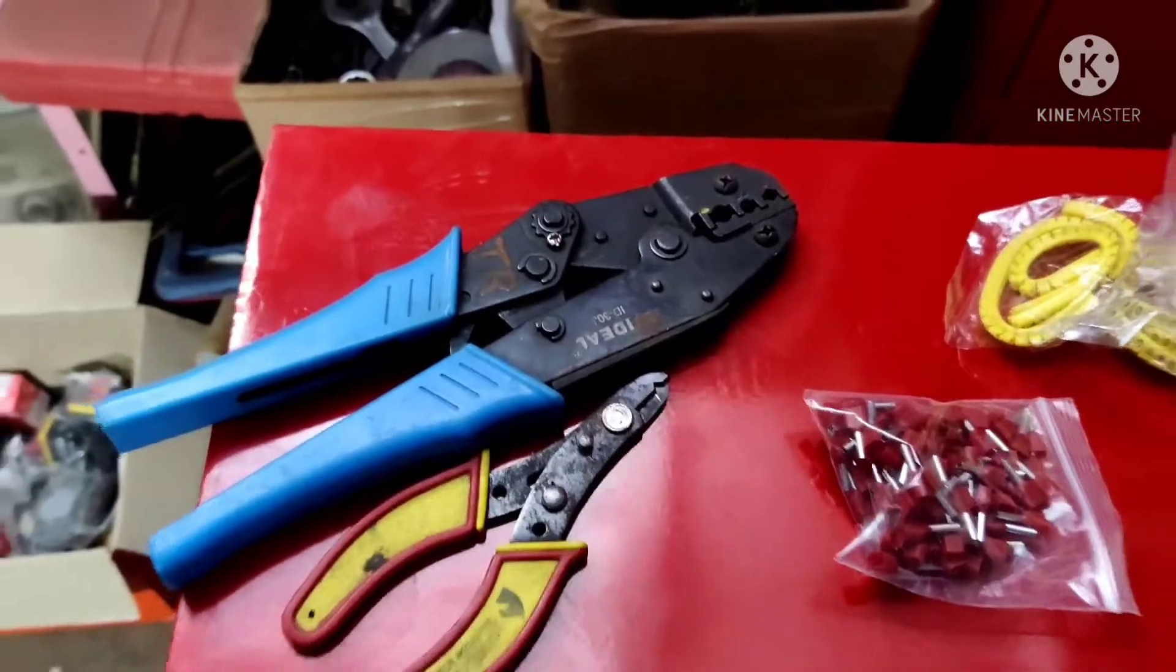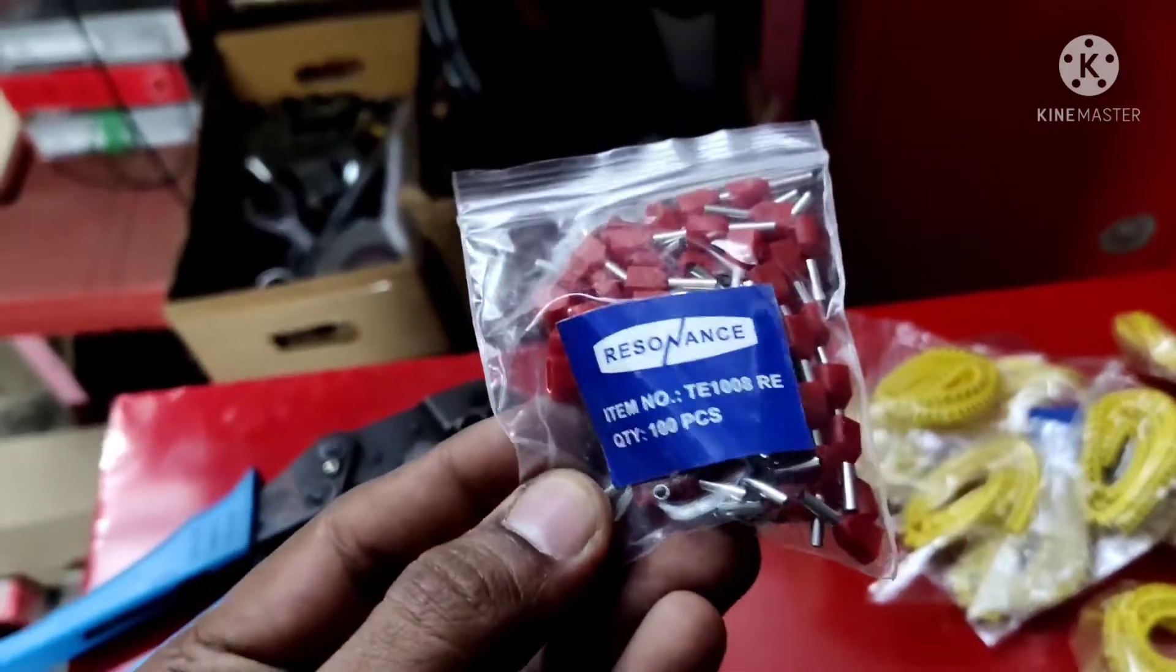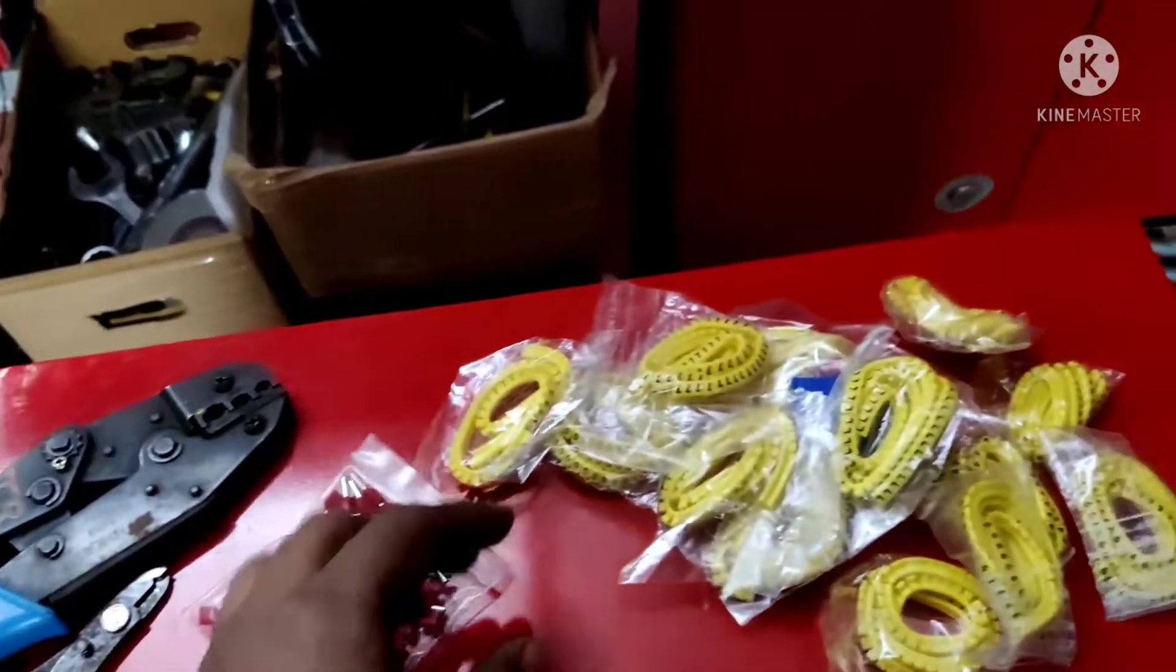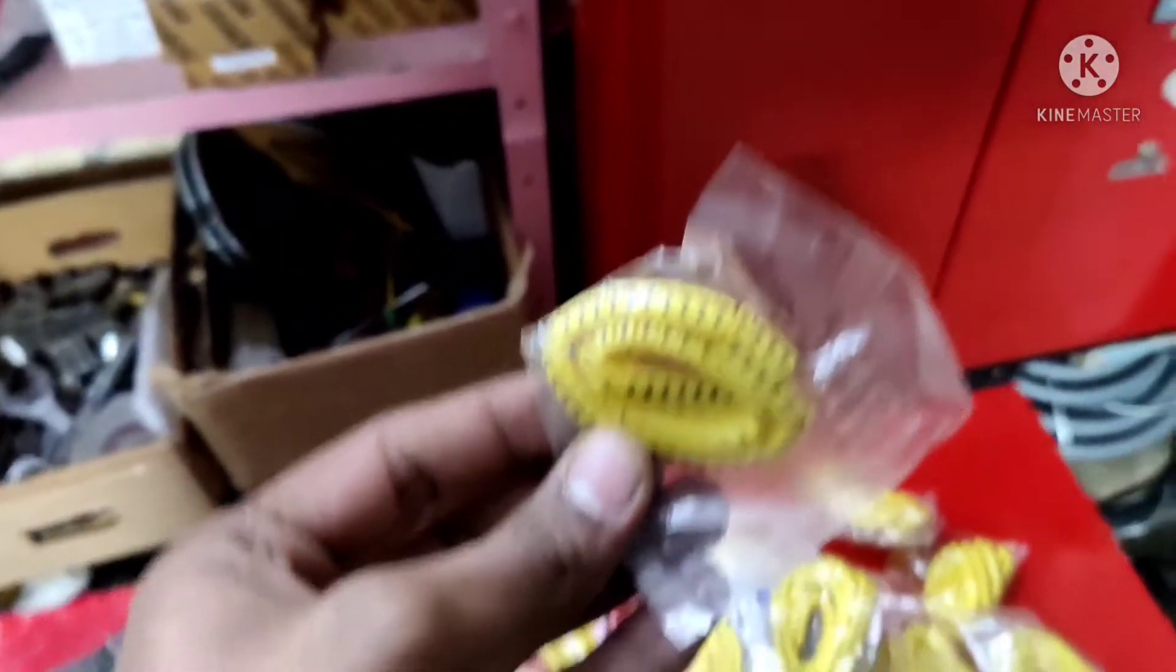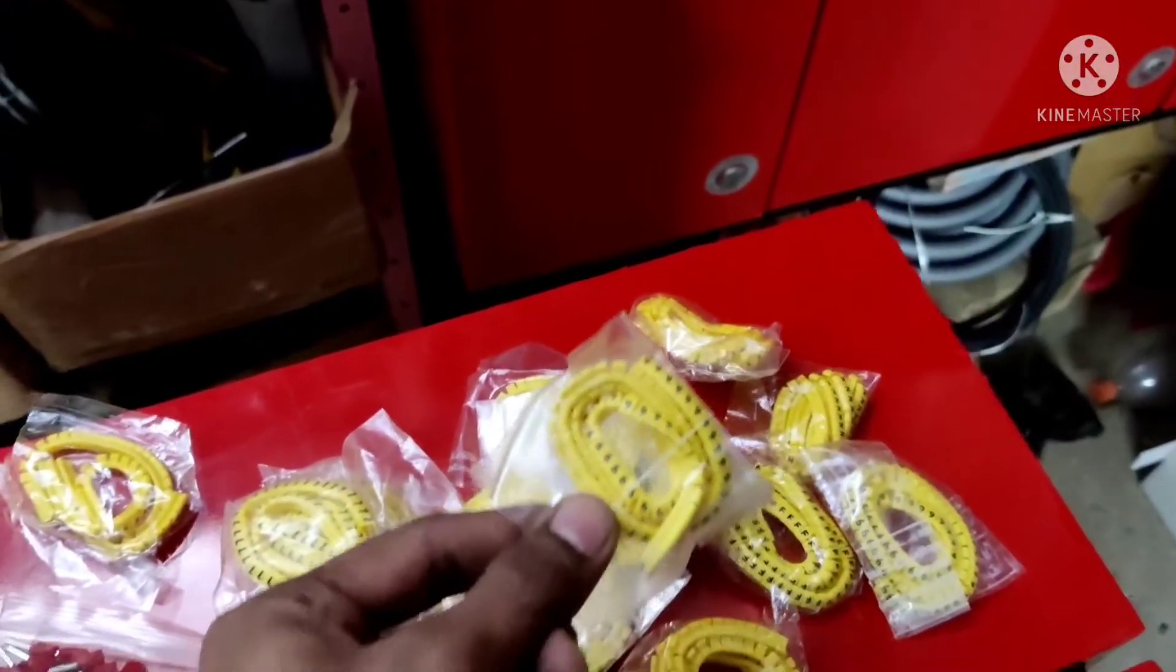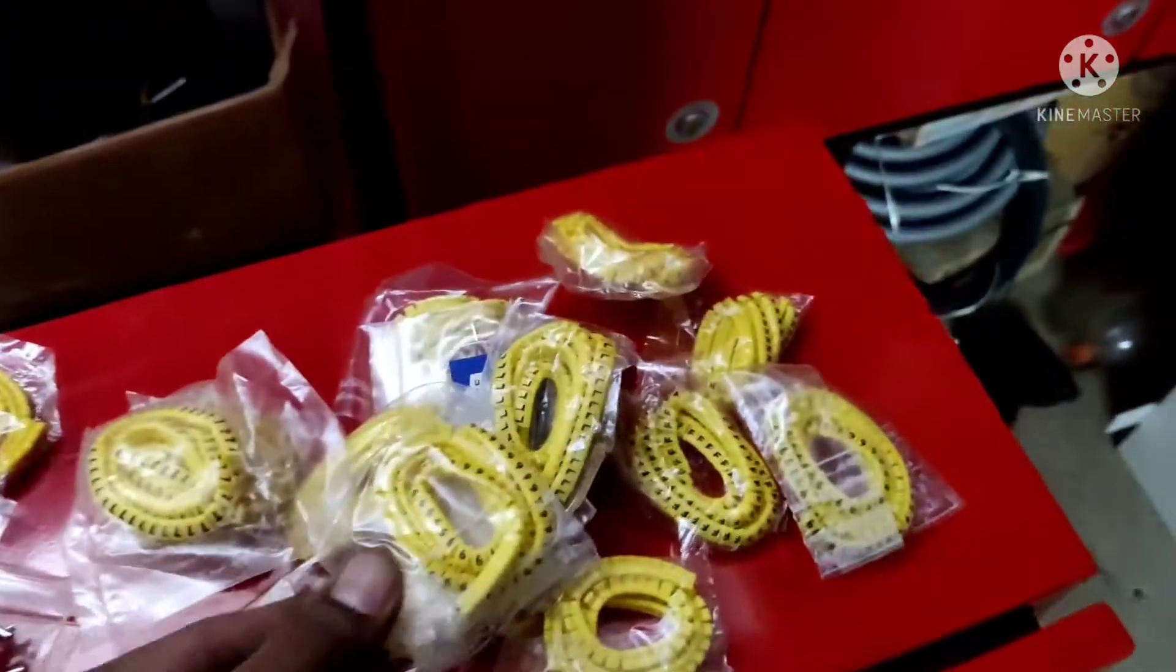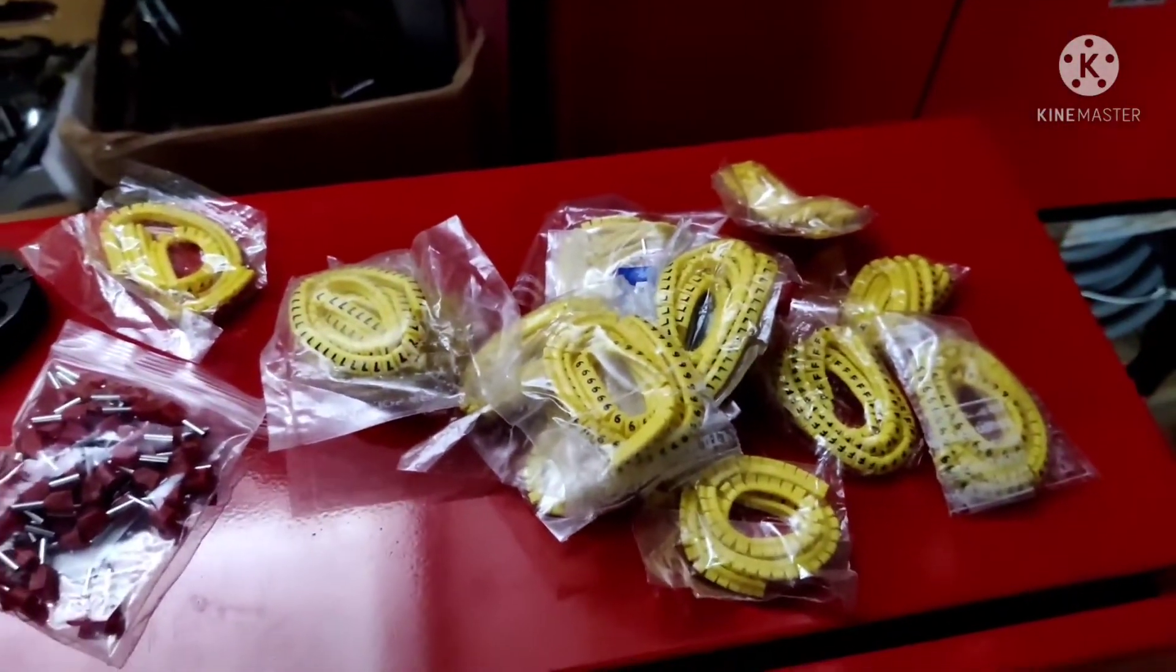The blue colored tool is called a crimper which will be used for crimping these lugs. These are numbering ferules used for addressing the wire terminations. Each and every wire termination has its own unique ferule number which is prescribed in control wiring diagram.